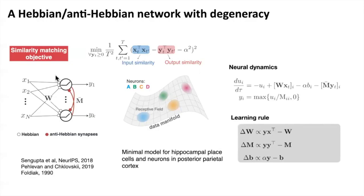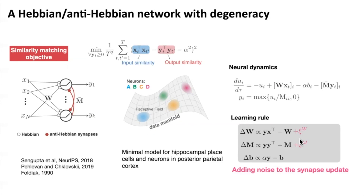Specifically, this network takes an input vector X and runs neural dynamics until it converges to generate neural activity Y, and then it updates both the feedforward weight matrix W and the lateral matrix M by this simple Hebb-under-Hebb learning rule. Our primary interest is to explore how introducing synaptic noise will affect the long-term behavior of receptive fields.